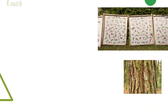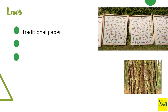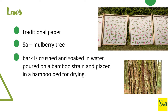In Laos, Sa paper was used as their traditional paper. Sa is a term for the mulberry tree. The bark is crushed and soaked in water until it dissolves into a paste. The liquid is then scooped out, poured through a bamboo sieve, and finally placed in a thin layer on a bamboo bed and dried in the sun. Bark is the outer layer of the tree.